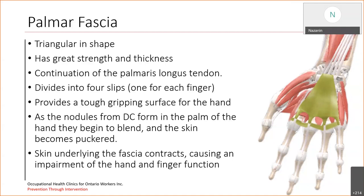In terms of the palmar fascia itself, it's triangular in shape. It has great strength and thickness. It's a continuation of the palmaris longus tendon, and it divides into four slips, which goes to each finger as you can see in the picture. It provides a tough gripping surface for the hand, and as the nodules from Dupuytren's Contracture form in the palm of the hand,